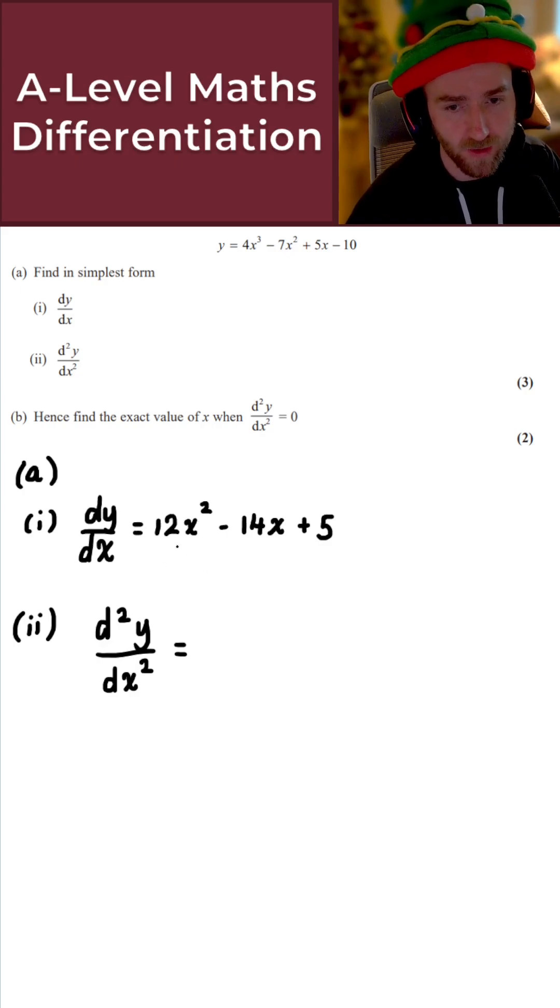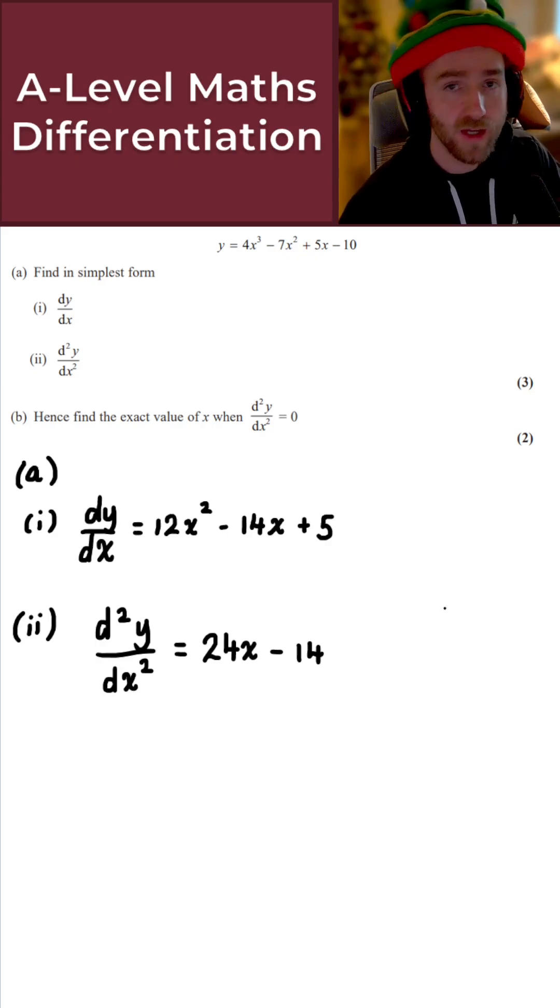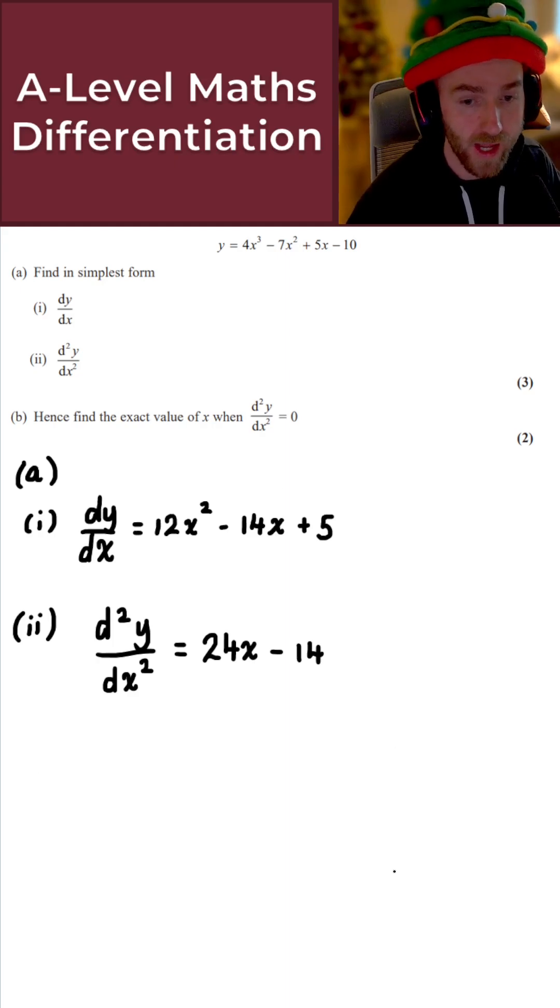So 12 times 2 is 24, reduce the power by 1, so I get 24x there. The minus 14x here just becomes minus 14, and the plus 5 here, that's just a constant. So once you differentiate a constant, it just becomes 0. So there we go, that gives the solution to part 2.